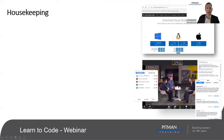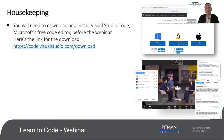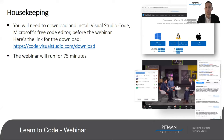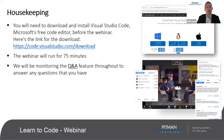First things first — we managed to send out instructions about downloading something called Visual Studio Code. It's a free Microsoft download that will come in really handy for the workshop in a few minutes time. If anybody hasn't yet downloaded it, the link is already in the chat box. If you could download it while I'm talking through these next couple of slides — it only takes a minute or two — you'll be ready for the workshop when we start creating code. The webinar will run for 75 minutes, so please stick with us right to the very end as we've got some important messages to share.